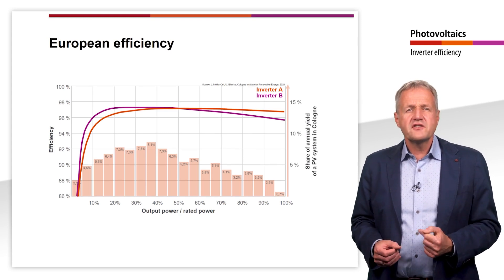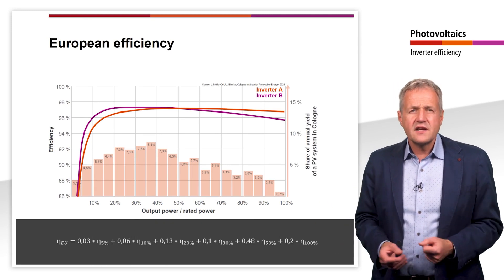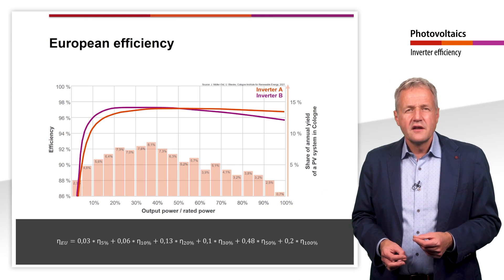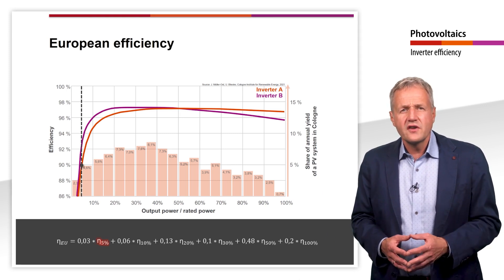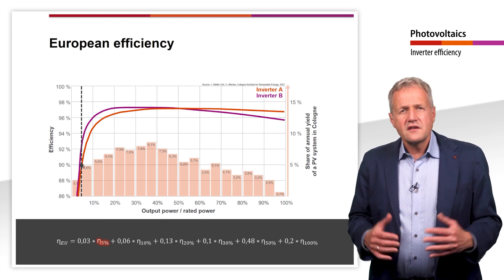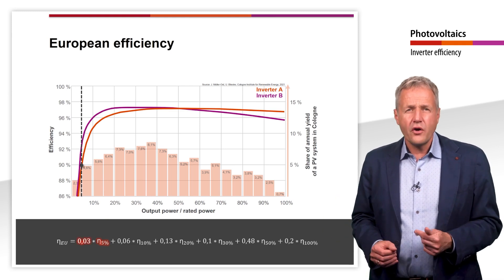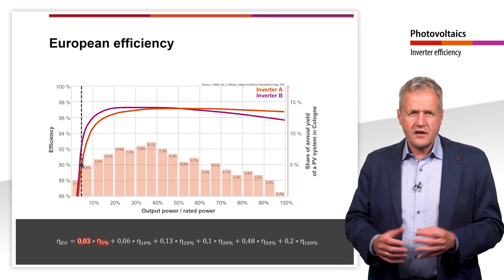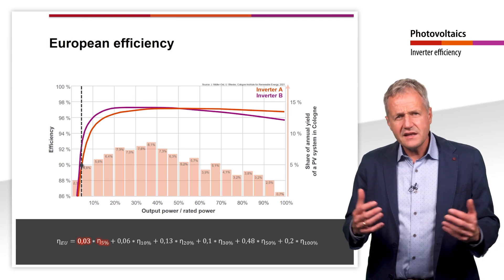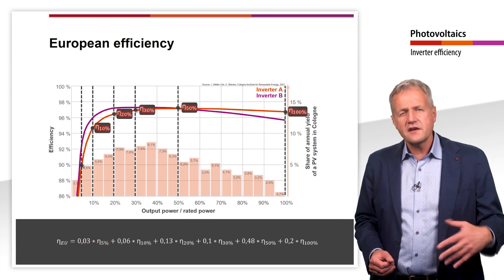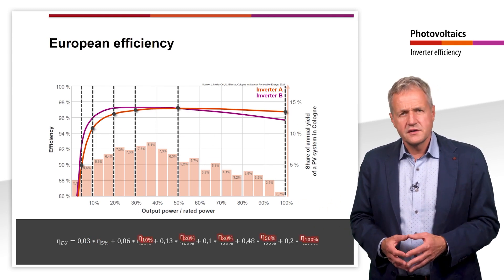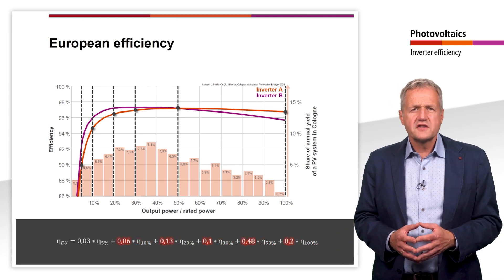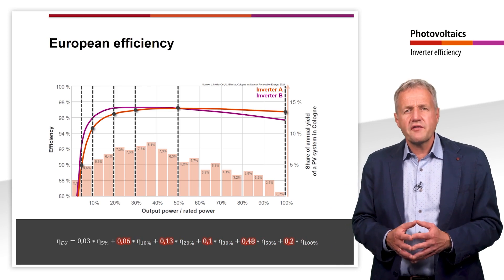For this reason, the European efficiency eta_EU was defined, which weighs the individual partial load efficiency according to the frequency of occurrence in Central Europe. The value eta 5% is the efficiency which occurs at 5% nominal power of the inverter. This efficiency is weighted with the factor 0.03 — so it is assumed that the inverter works 3% of the energy at 5% of the nominal power. Exactly the same is done with the efficiencies at 10, 20, 30, 50 and 100% of the nominal power, each weighted by a different factor. The highest weighting is given to the efficiency at half the nominal power, which is included in the calculation with a factor of 0.48.